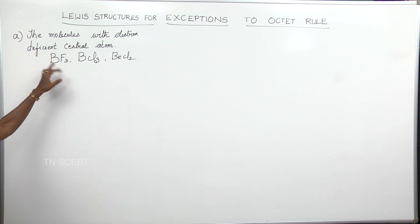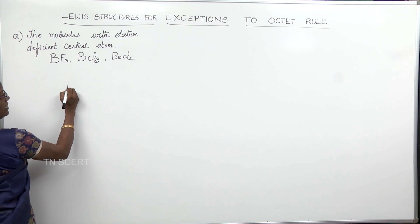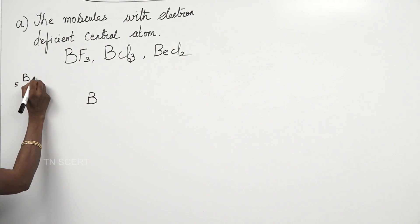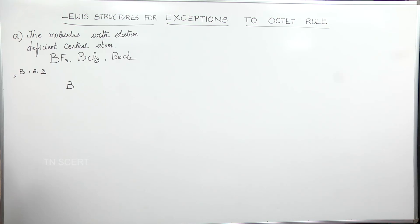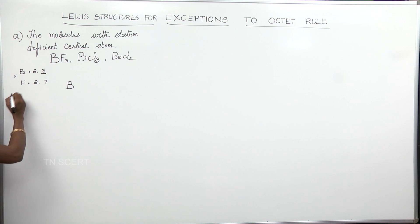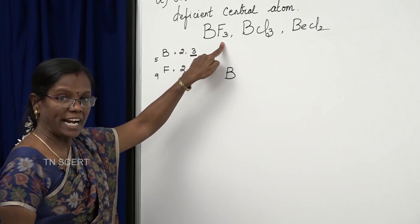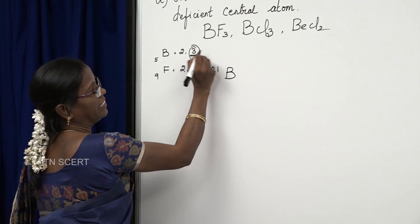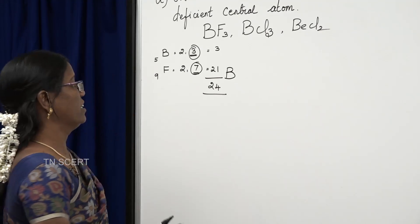Let us take the example of boron trifluoride and write its Lewis structure. Boron is the central atom. The atomic number of boron is 5, so it has 3 valence electrons. Fluorine has atomic number 9 with 7 valence electrons, and we have 3 fluorine atoms, so 3 × 7 = 21. Total valence electrons for BF₃ = 24.